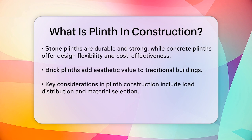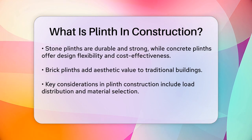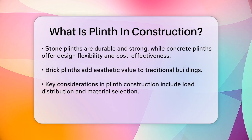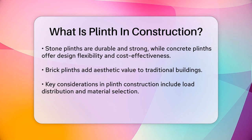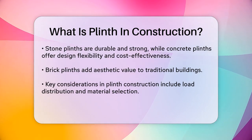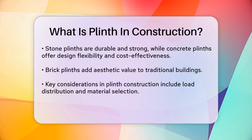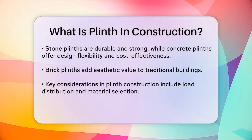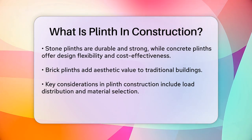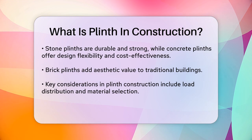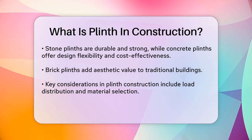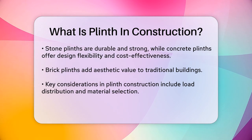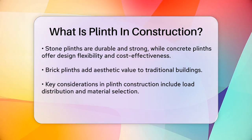When constructing a plinth, several factors need to be considered. Load distribution is critical, so the plinth must be designed to evenly spread the weight of the building. Material selection should be based on environmental conditions and architectural requirements. The minimum height of a plinth from the natural ground level is typically between 300 mm to 450 mm, and at least 150 mm above the road level to prevent moisture and dampness.